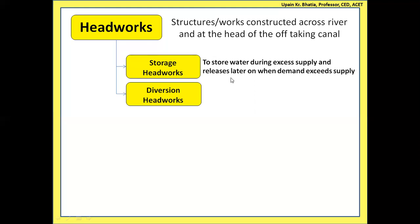This excess water is stored and released later on — after the monsoon period, or during the next summer when no rain is available and the catchment is not sending water to the streams. The stored water is then sent to areas where demand exceeds supply. Storage is designed to be sufficient to cover the next full year, and refilled again in the following monsoon season.